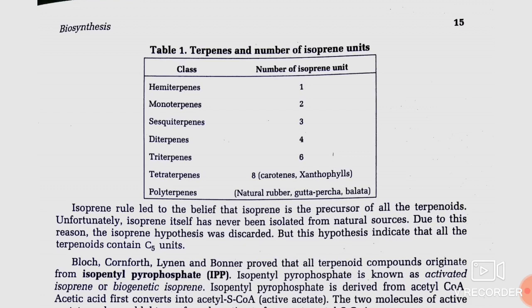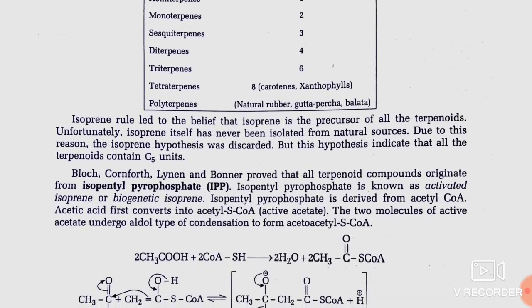Now, how the isoprene unit functions: isoprene led to the belief that isoprene is the precursor of all terpenoids. Unfortunately, isoprene itself has never been isolated from natural sources. Due to this reason, the isoprene hypothesis was discarded. However, this hypothesis indicates that all terpenoids contain C5 units, and generally in C5 units there is a double bond.